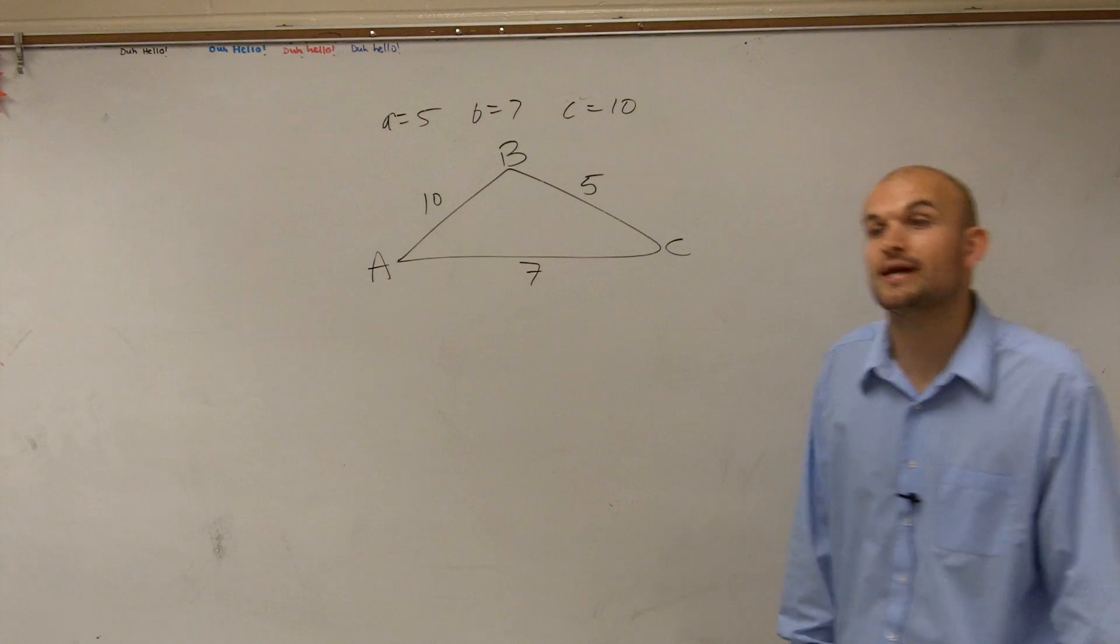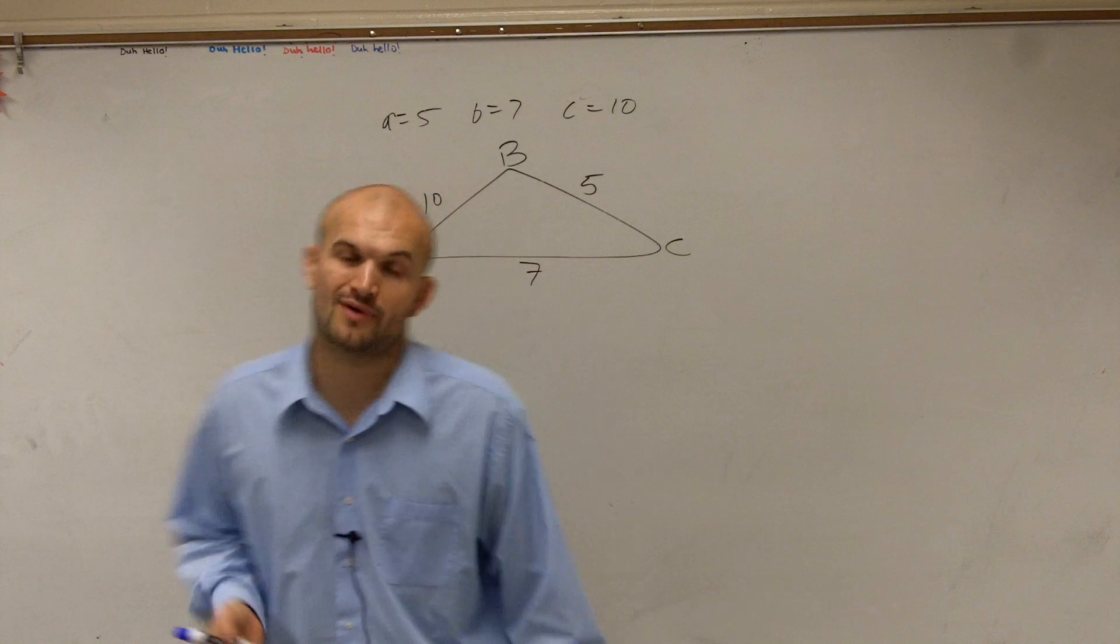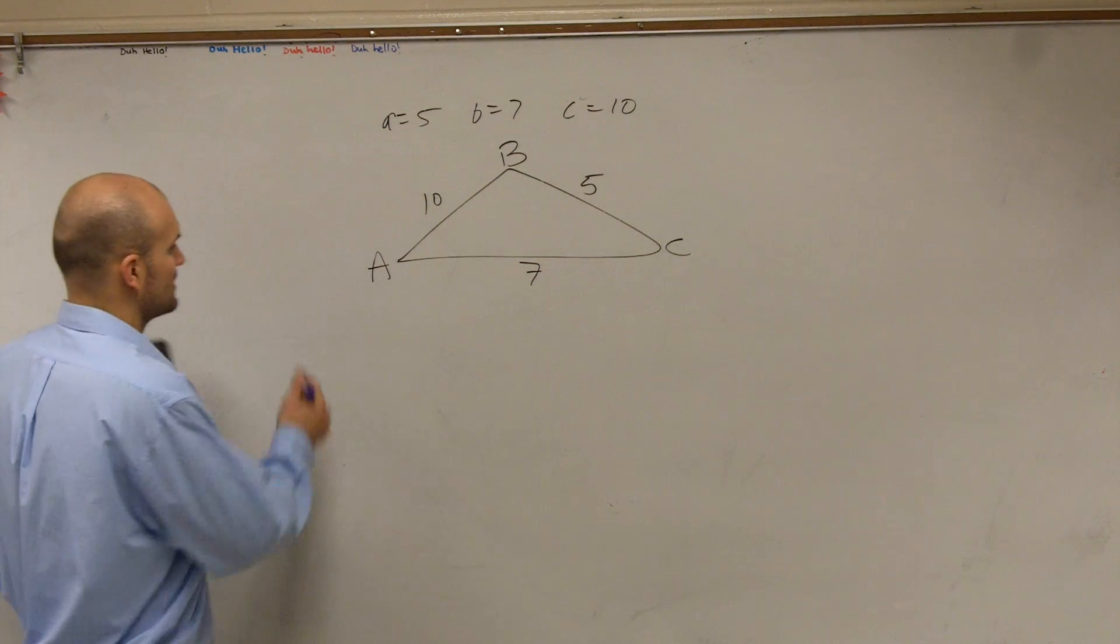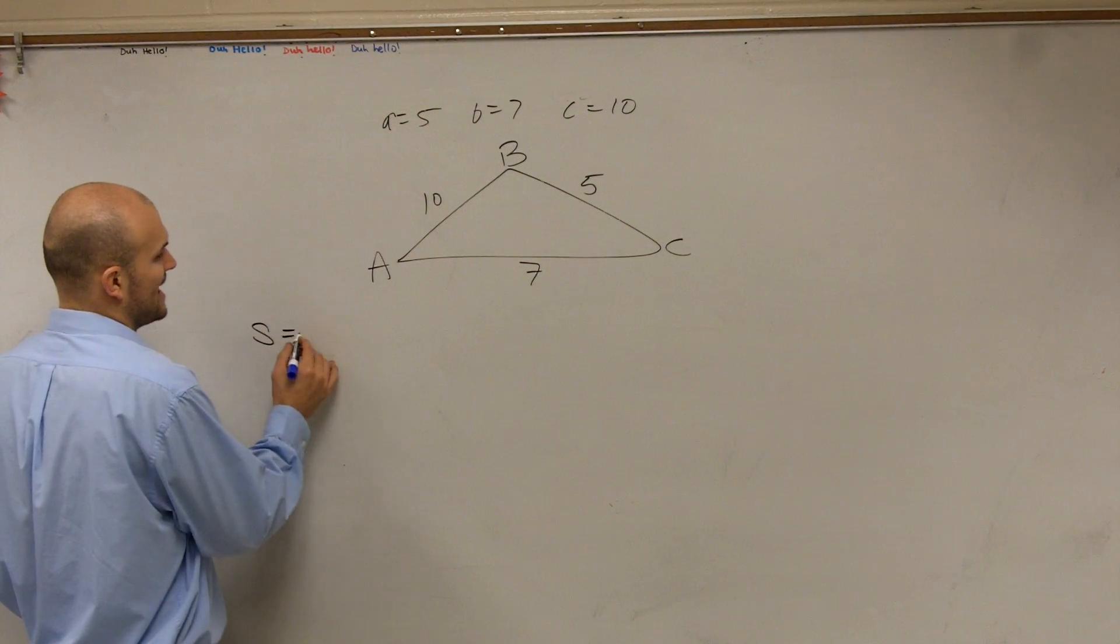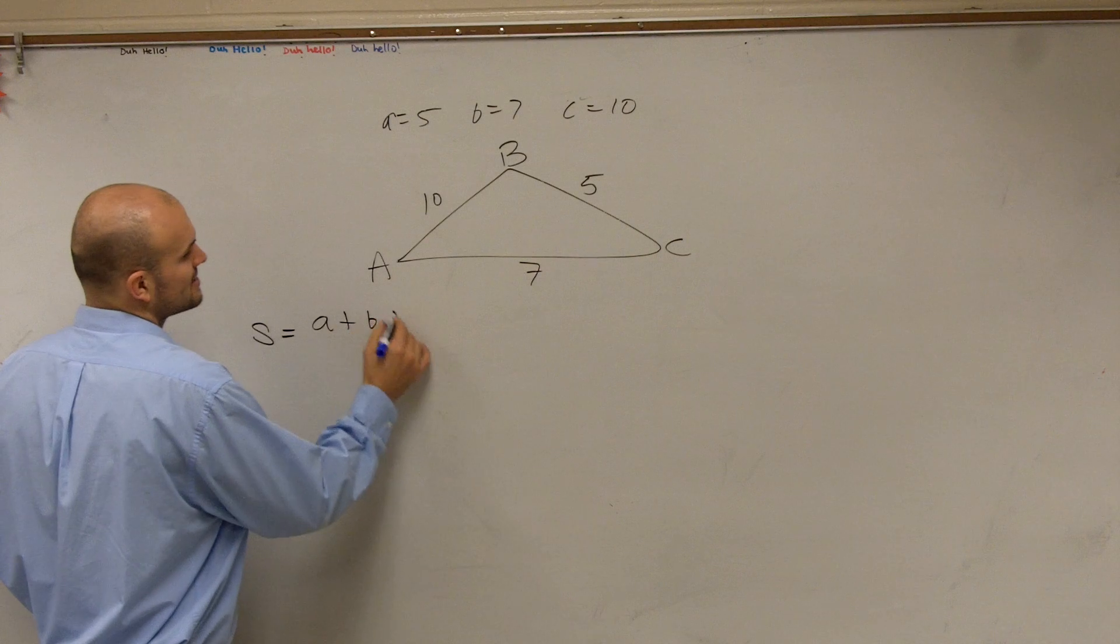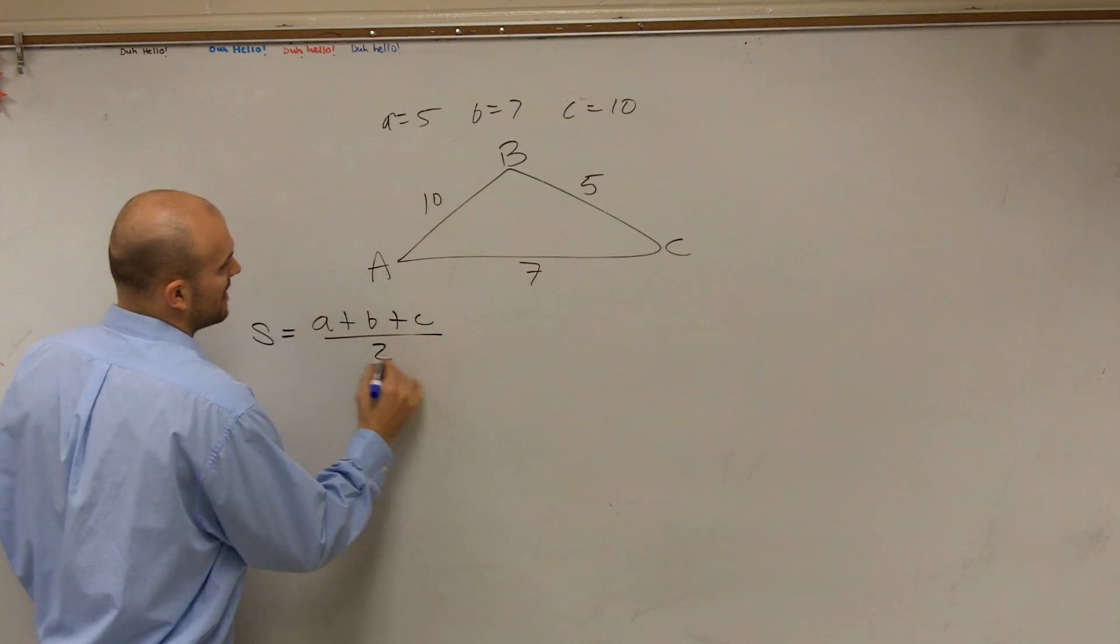Well, there's a certain formula called Heron's formula that you're going to want to write down. And what Heron's formula says is, first of all, you're going to want to find s, which is going to be your three side lengths of your triangle divided by 2.